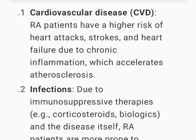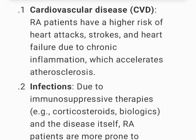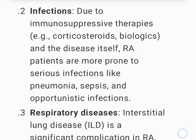2. Infections. Due to immunosuppressive therapies, e.g. corticosteroids and biologics, and the disease itself, RA patients are more prone to serious infections like pneumonia, sepsis, and opportunistic infections.